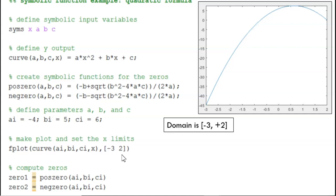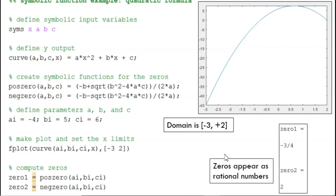To compute the zeros, I simply pass in the same a, b, and c values to the pos0 and neg0 functions I had defined. I leave these commands unsuppressed in order to view the outputs directly. Here we see the results. Again, we note that these are stored as exact rational numbers rather than decimal numbers.